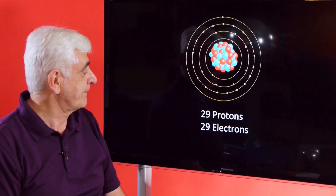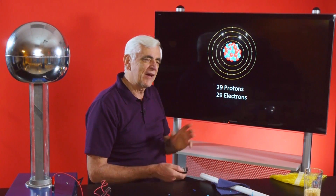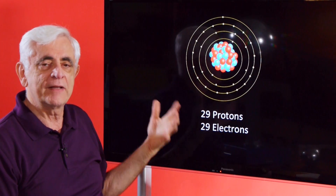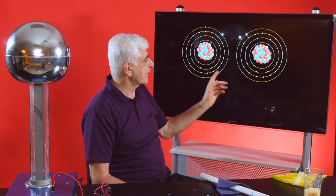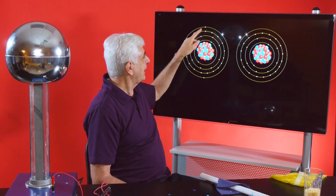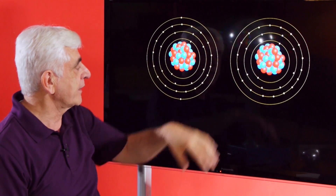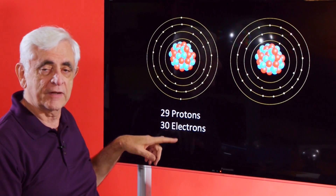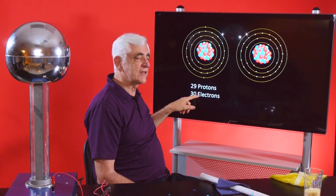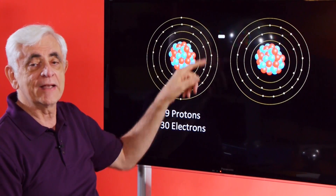Let's go back to our copper. Copper has 29 protons and 29 electrons — it's neutral. But copper, like a number of materials, has outermost electrons that tend to be loosely attached, and they will occasionally wander from one atom to another. Here we've got two copper atoms near each other. This one now has two electrons and that one is missing the electron in the outer area. So this one's got 29 protons and 30 electrons. Now that it has 30 electrons, it has more negative charges than positive charges — giving the entire atom a negative charge.